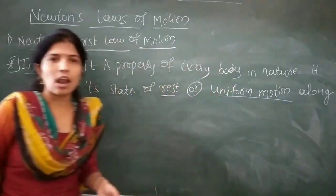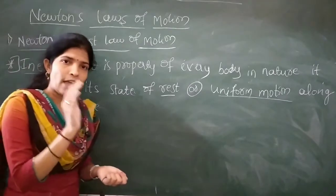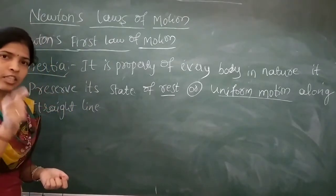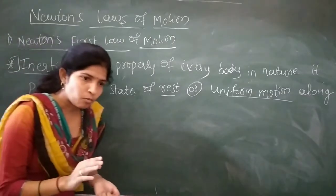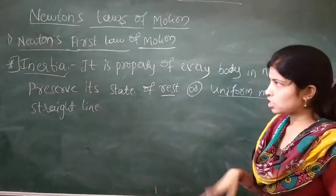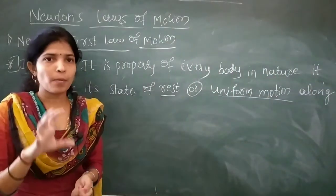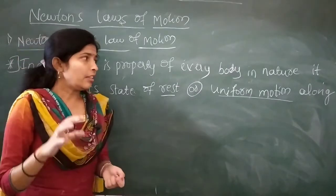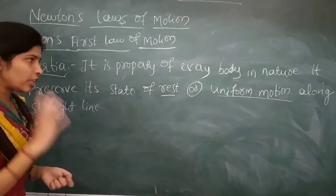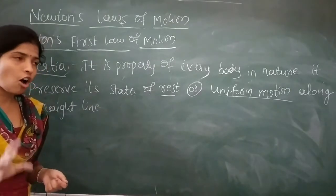Every object or body has the property of inertia. If the object is at rest, then it remains at rest. If the object is in motion, then it remains in motion. We need to apply an external force to change its state. Inertia is the property of every material — it preserves the current state of the body.